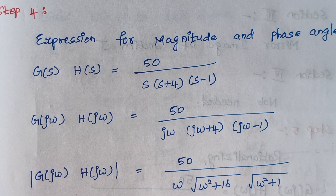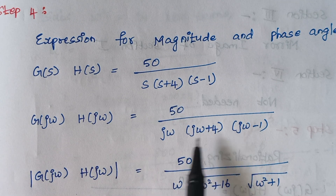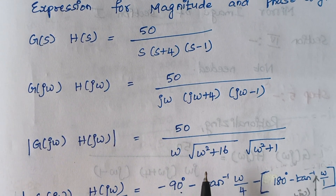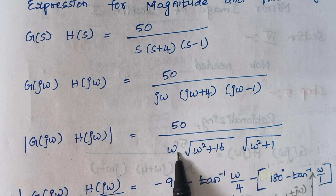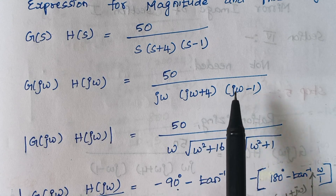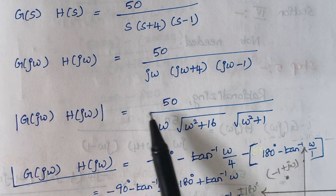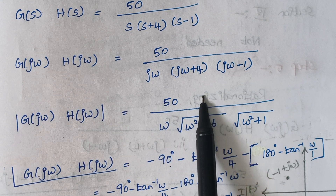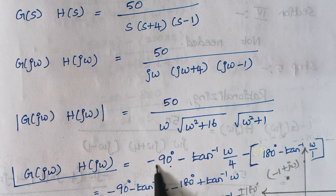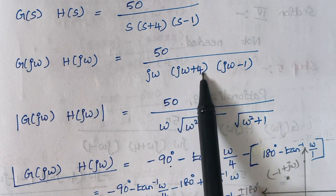Step four is finding the expression for magnitude and phase angle. We replace S by jω. To find the magnitude, we take the square root of squared terms: the denominator becomes ω, √(ω² + 16), and √(ω² + 1). For the phase angle, ω in the denominator contributes −90°, then −tan⁻¹(ω/4) for the second term, and we now analyze the third term jω − 1 separately.